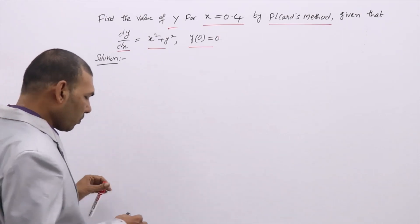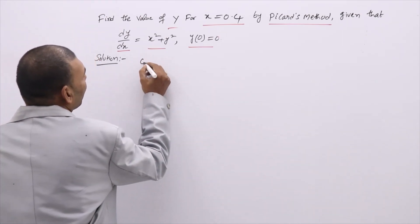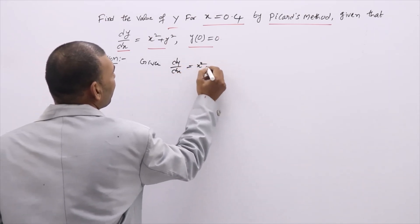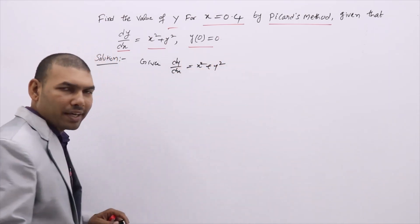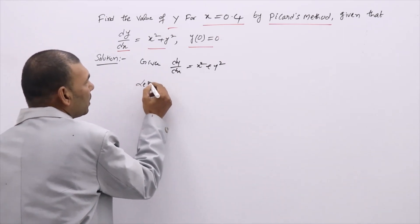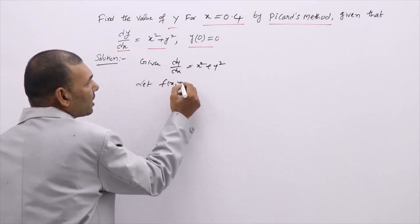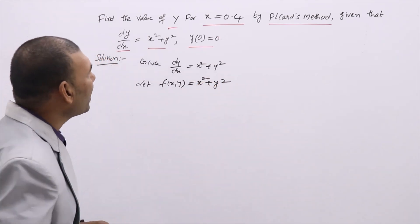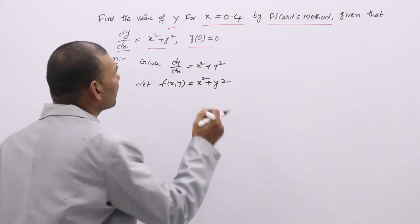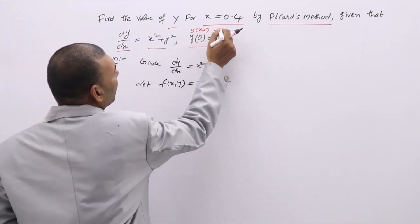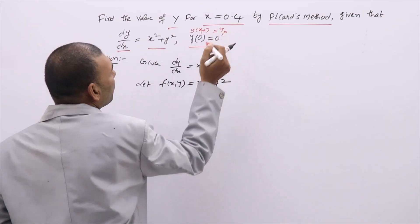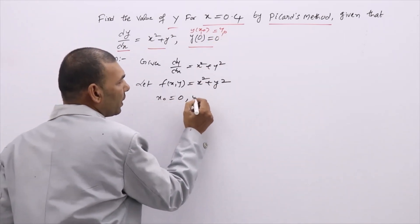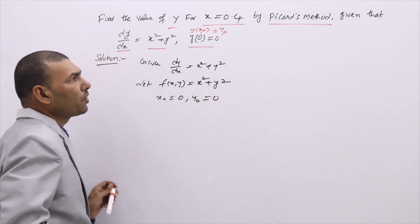First, note down what is given. Given: dy/dx is x squared plus y squared. Generally, except in Euler's method, in remaining methods we assume dy/dx equals f(x, y), so x squared plus y squared. Now compare the given initial condition with y(x₀) equal to y₀. We find x₀ is 0 and y₀ is also 0.